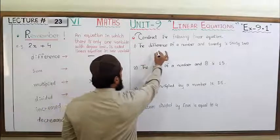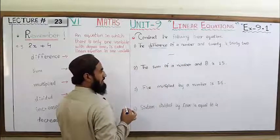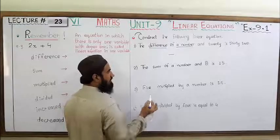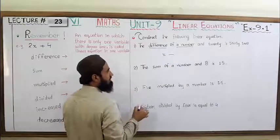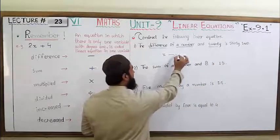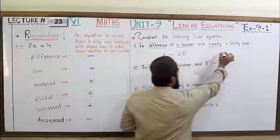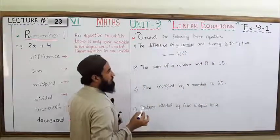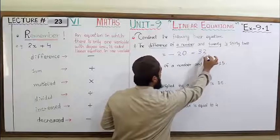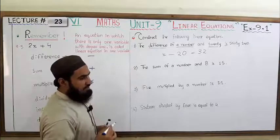Pehla statement: 'The Difference of a number and 20 is 32.' Difference — maine kaha tha, minus ke liye use karte hain. 'Of a number' — yani koi ek number jo humein maloom nahi, wo unknown hai, to unknown ke liye hum X use karenge — variable. 'And 20' — aur usme 20 ko minus kiya. 'Is' — wo equal to ki sign ke liye use hoga. To yahan hum equal to ki sign laga denge. '32' — humne 32 likh diya. Is tareeqe se is sentence ko linear equation construct karke dikha diya: X - 20 = 32.